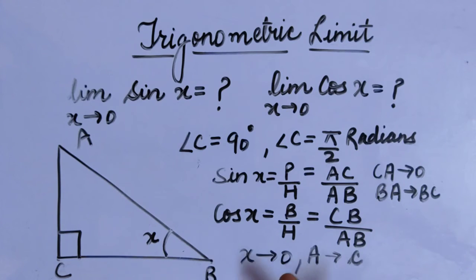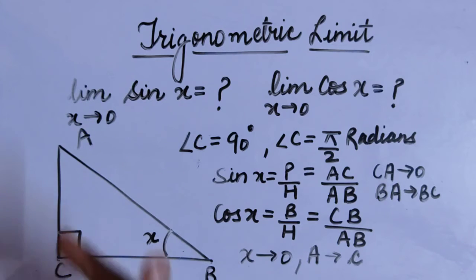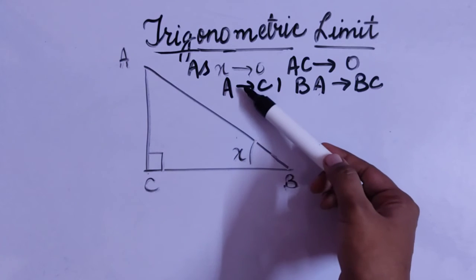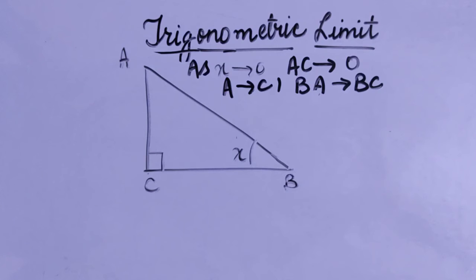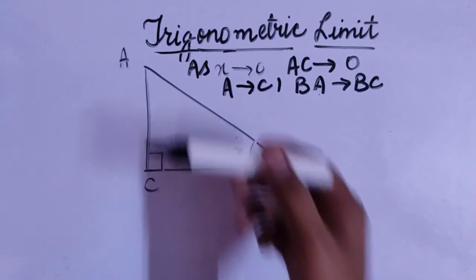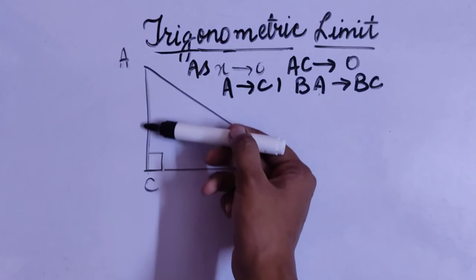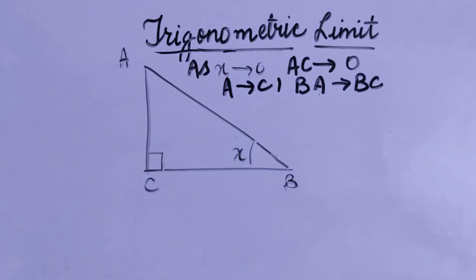Why did this happen? Because x was approaching towards 0. As the angle x was approaching 0, vertex A started approaching C. In the same manner, AC started decreasing, because as the angle gets smaller, the perpendicular CA decreases as vertex A comes towards C. And your BA, the hypotenuse, will start tending towards BC.